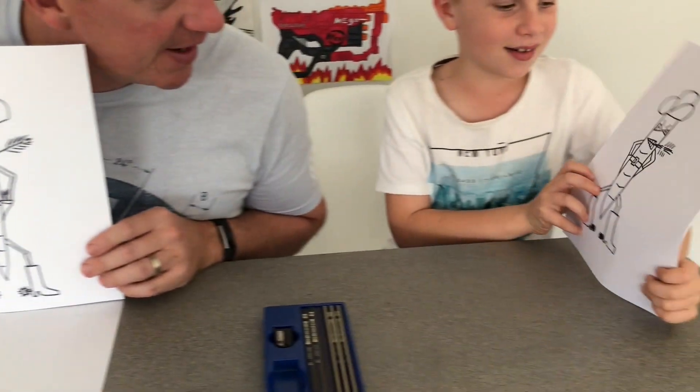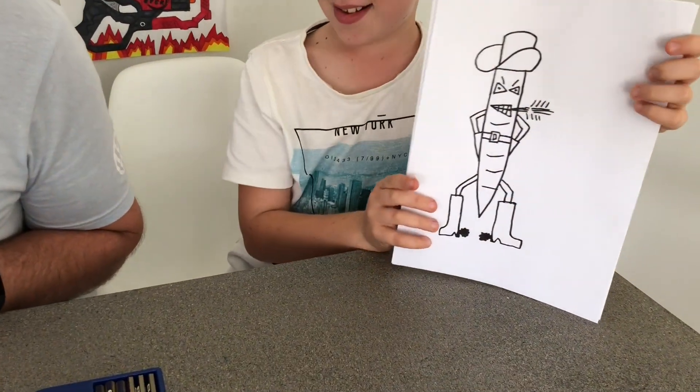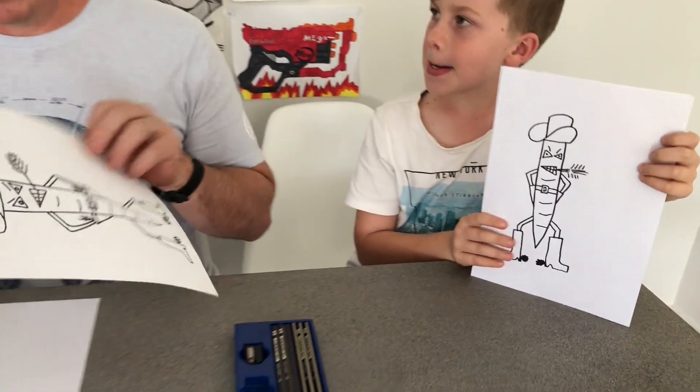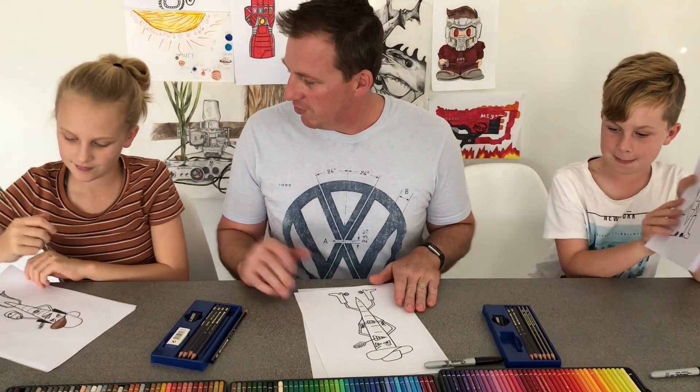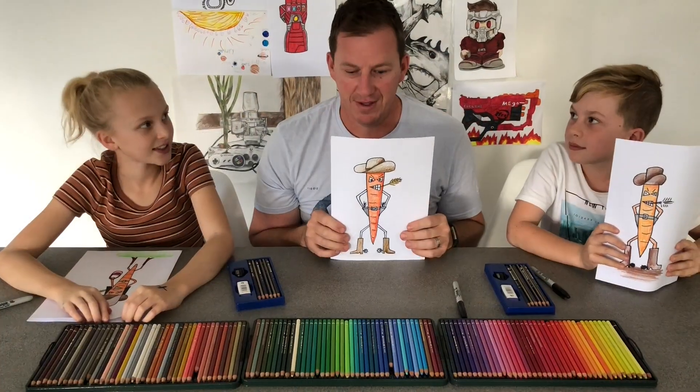How'd you go mate? Good. Yeah, you've done a good job with yours. Alright. We're going to colour in with pencils. So stay tuned for how they end up looking. Oh, I like your shading. You've already made a start. There you have it.